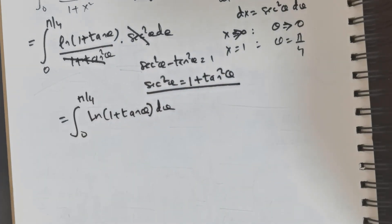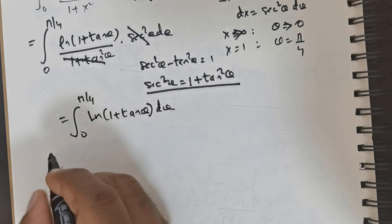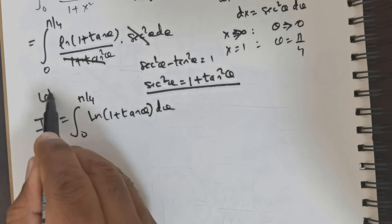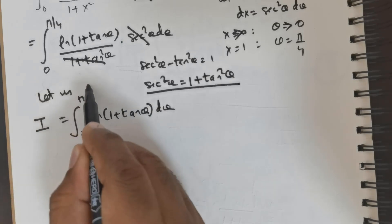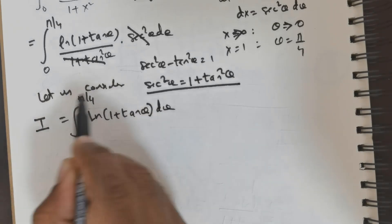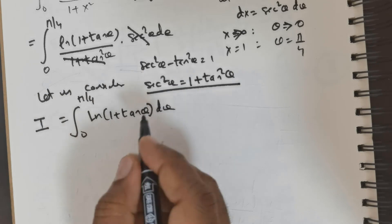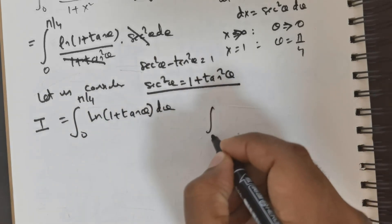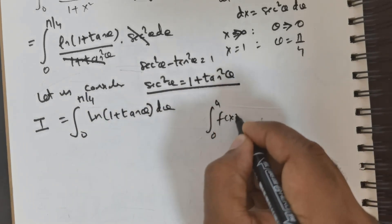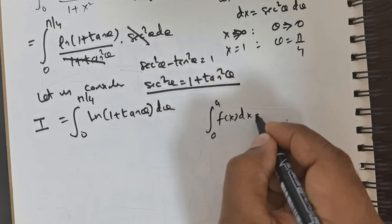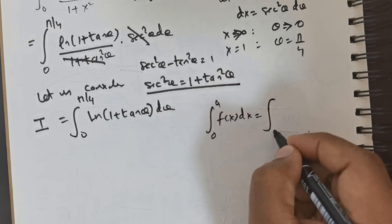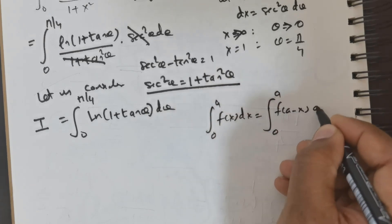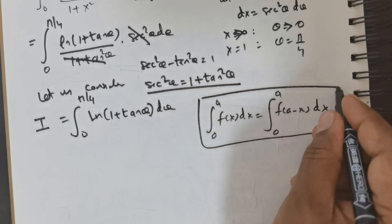Now I would like to call this integral I. Let I equal the integral from 0 to π/4 of ln(1 + tan θ) dθ. The King's property states that the integral from 0 to a of f(x) dx equals the integral from 0 to a of f(a − x) dx.